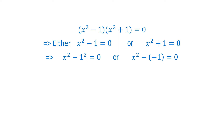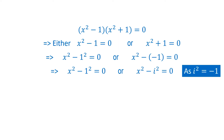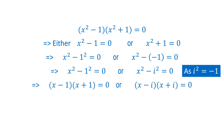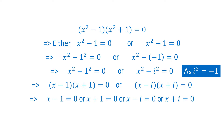This gives x² − 1² = 0 or x² − (−1) = 0. And since iota squared equals −1, this gives x² − iota² = 0. This gives the product of two factors (x − 1)(x + 1) = 0, or the product (x − iota)(x + iota) = 0. And so, either x = 1, or x = −1, or x = iota, or x = −iota.